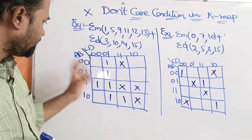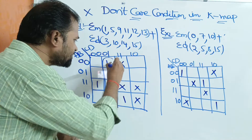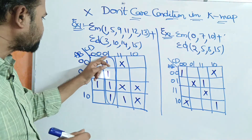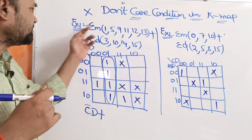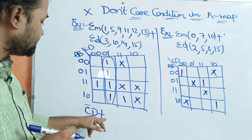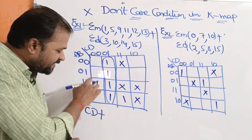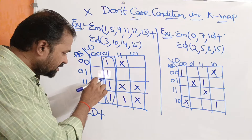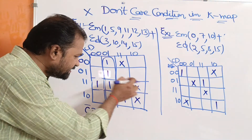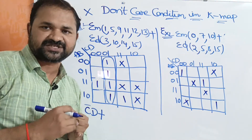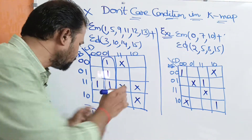Now the table is filled and we have to perform the grouping. We can make these four ones as a group — here A, B values are changing, and C, D values are 0, 1, so we can write it as C bar D. This is sum of products, so C bar D plus. Next, it is better to make these four cells as a group because if the group contains more ones or don't cares, it produces fewer literals.